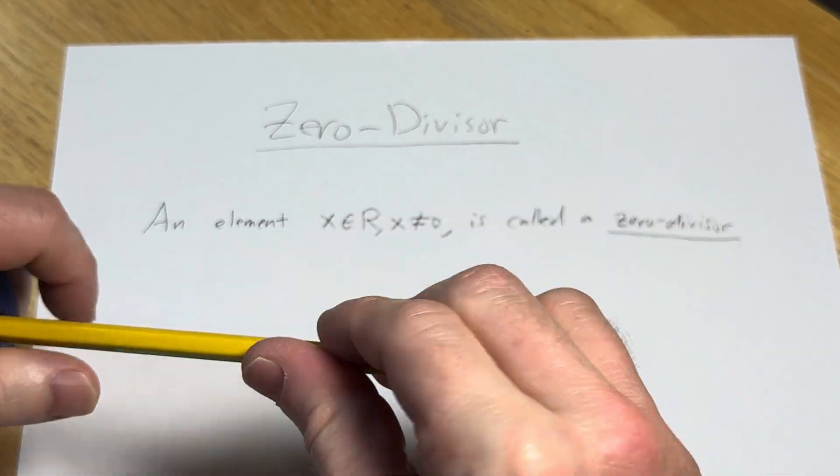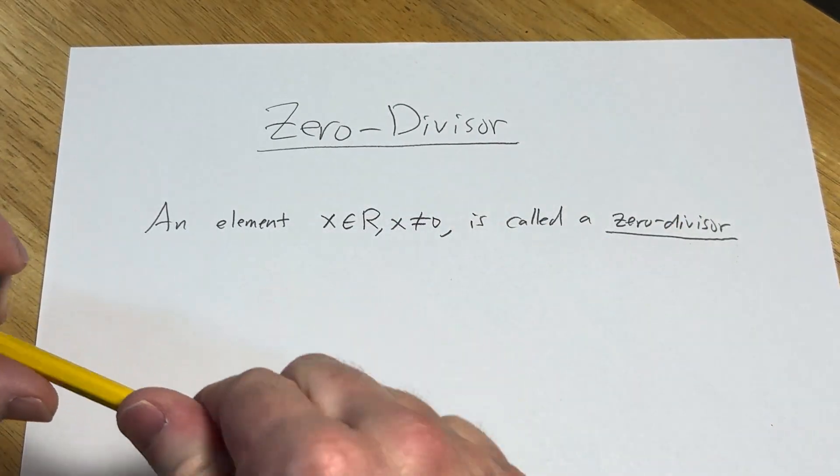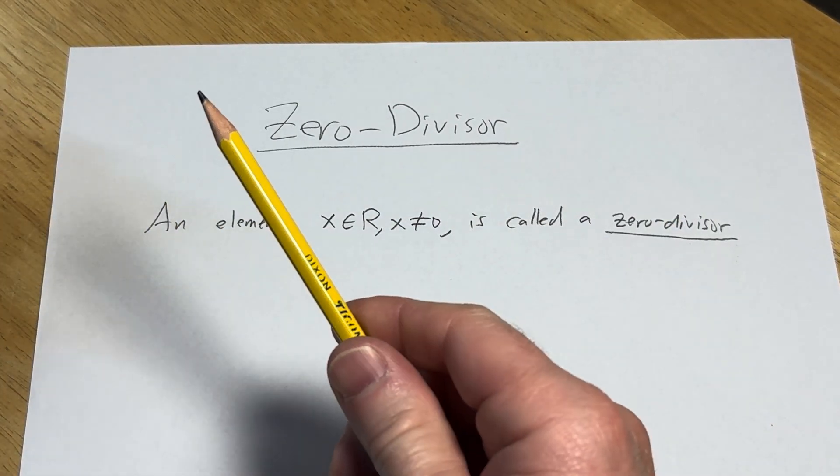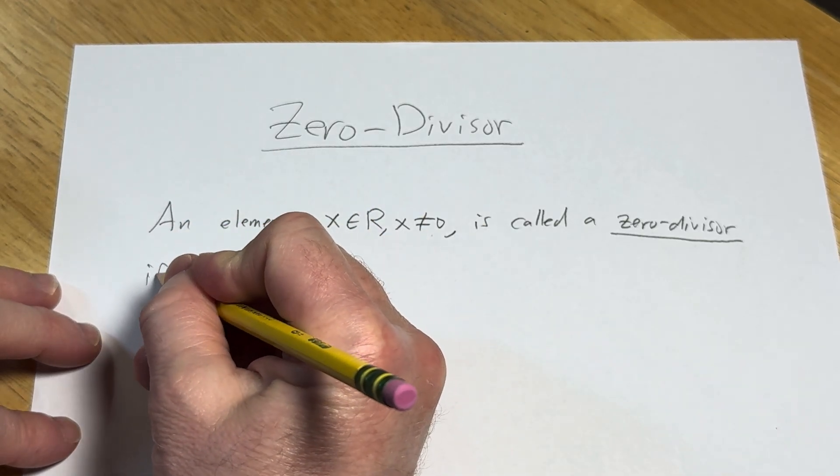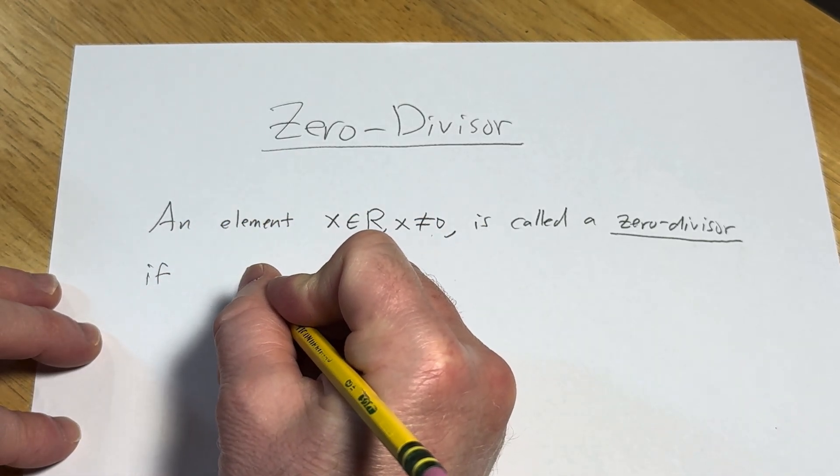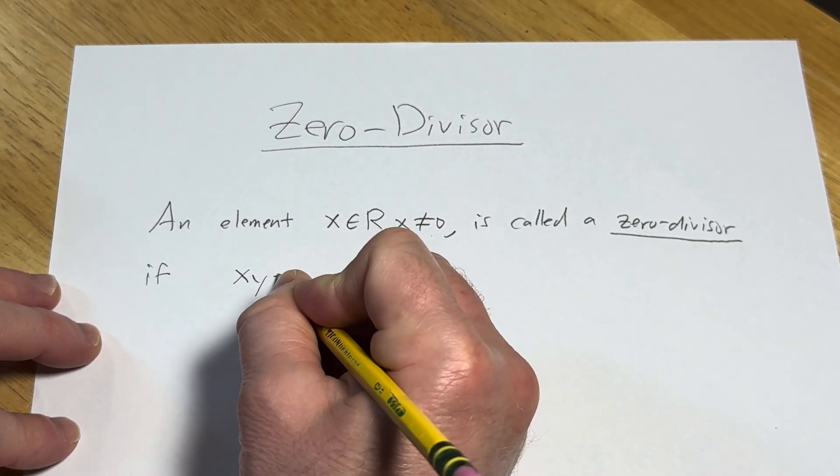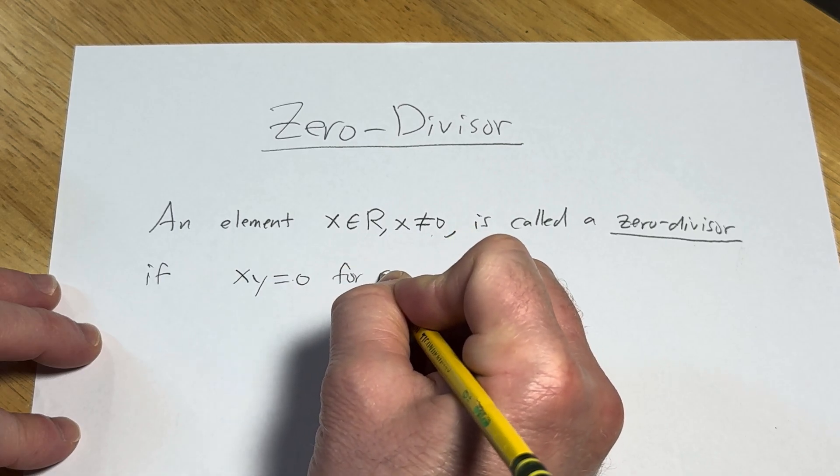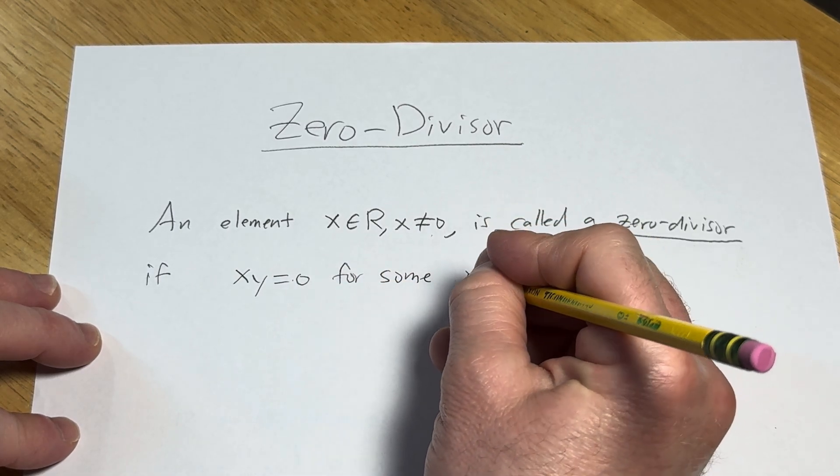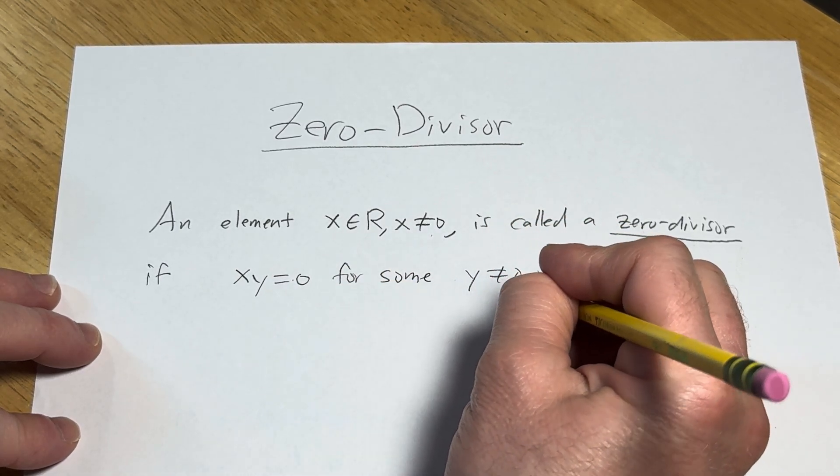So we take an element x in R, x not equal to zero, we're going to call it a zero divisor if x times y equals zero for some y not equal to zero, y in R.